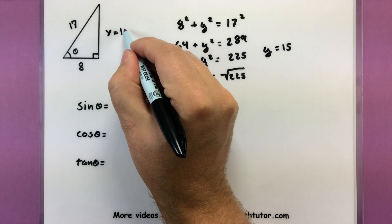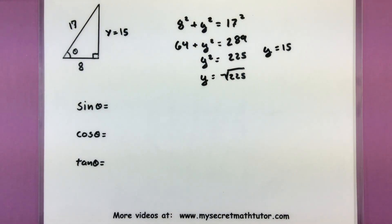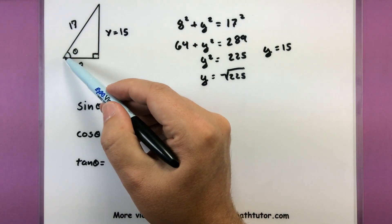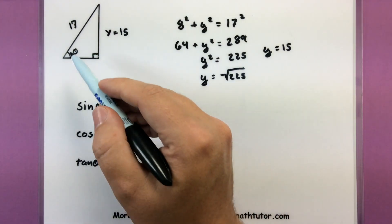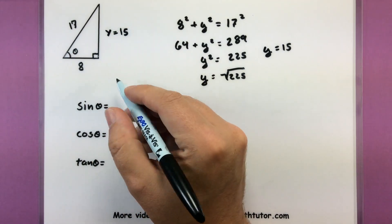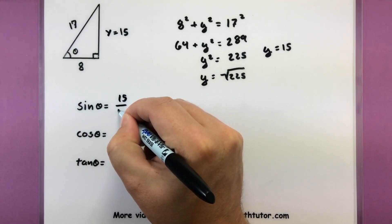So there's our missing side, Y equals fifteen. Now that we have all of our sides, we can form those ratios. Just making sure we keep focused on what angle we're actually talking about. So for sine of theta, we're talking about the opposite over the hypotenuse, we'll get fifteen over seventeen.